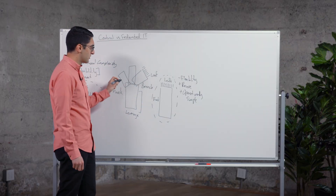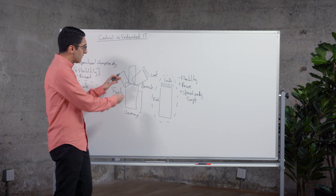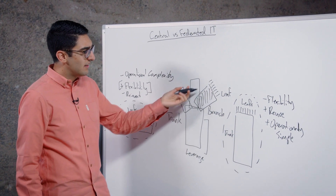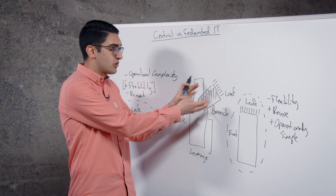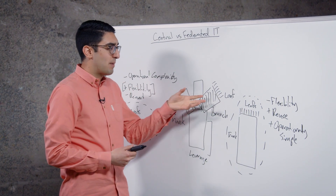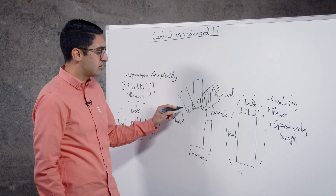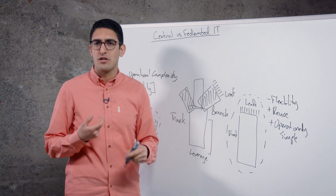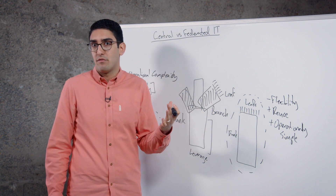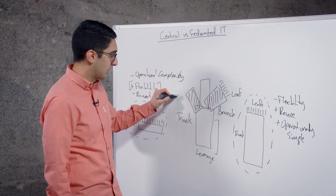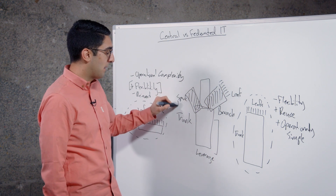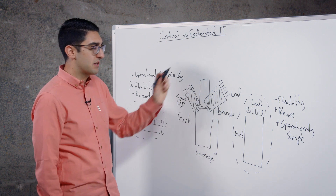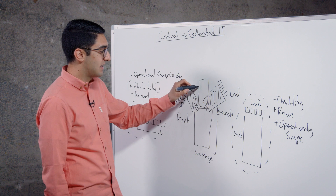We want to acknowledge that different business groups might have different requirements. If one group delivers user-facing microservices, Kubernetes might be a great branch for them since it's better suited for that workload. A back-office team focused on data processing, big data analytics, and batch reporting might standardize on Spark or a Hadoop data platform instead. And maybe a third group finds PCF makes the most sense for them.